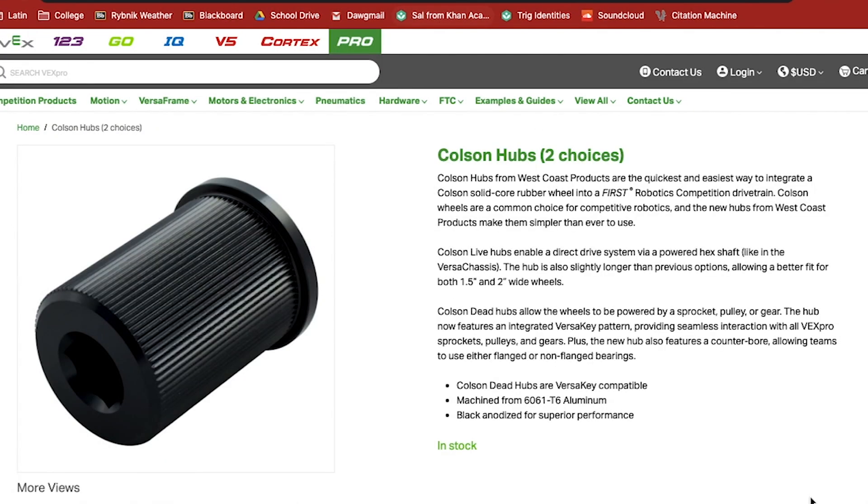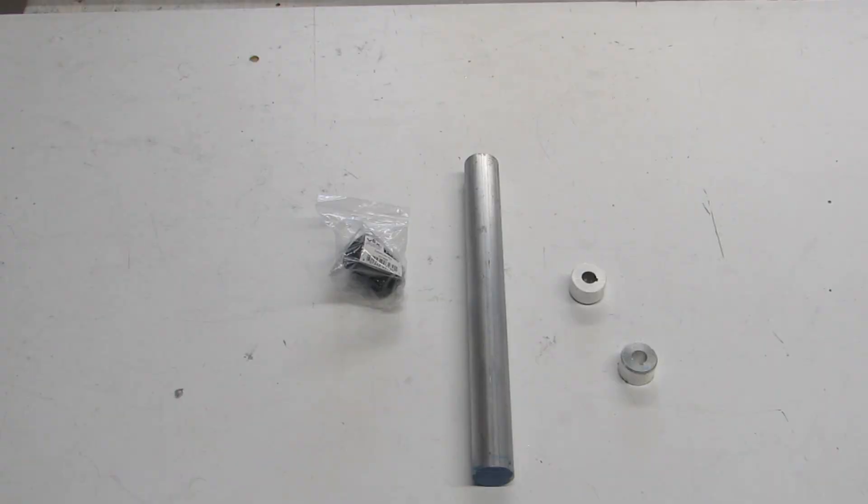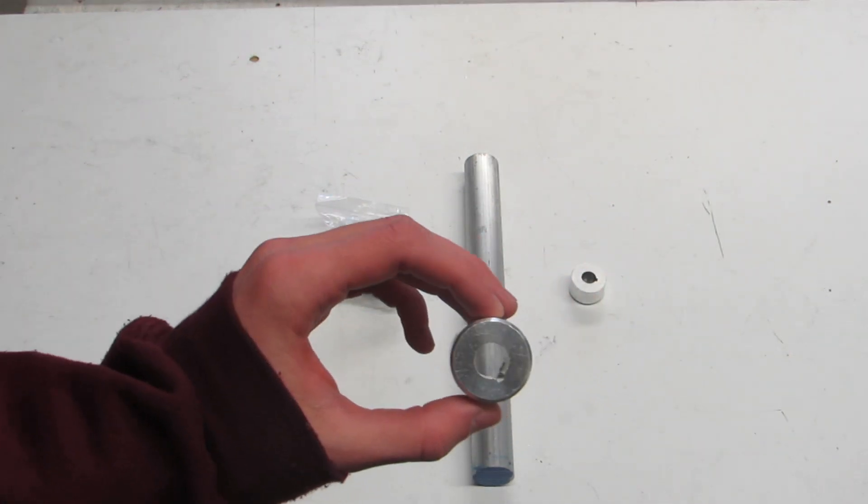Another quick thing to note is for this video I will be using Colson Live Hubs from Vex Pro. Another option you can use is to make your own live axle hub from aluminum stock by boring or broaching out your desired shape and size for your hub. Here's an example of what one could look like.